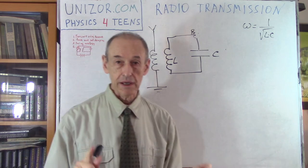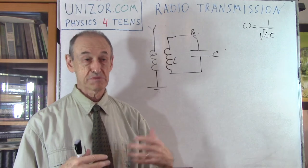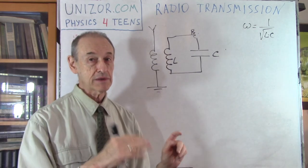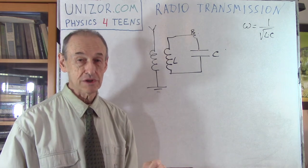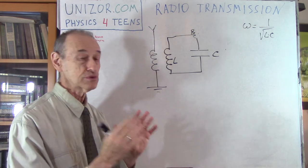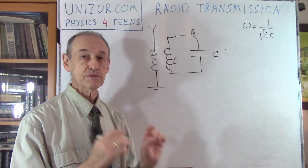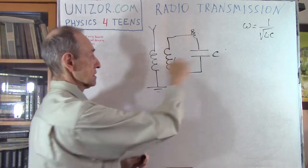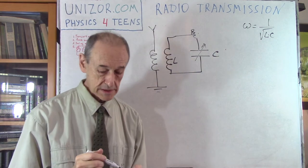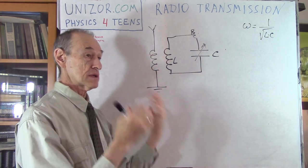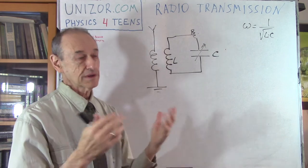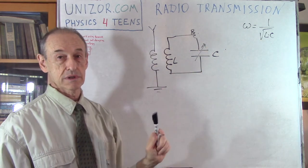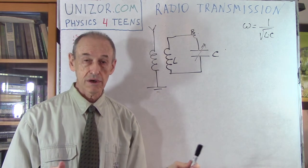I have not yet talked about how to send a signal like speech or a TV image. I'm talking only about the main carrier frequency. We will use this main frequency with certain modulators to transmit information, but that would be the subject of a different lecture. Right now we're talking about how to transmit electromagnetic waves of a certain frequency. A receiver uses a variable capacitor tuned to a specific frequency; a transmitter has a fixed frequency and broadcasts it.